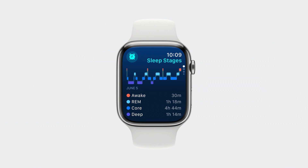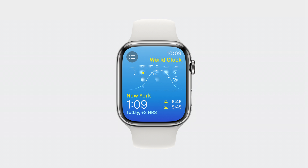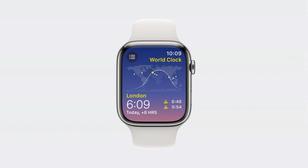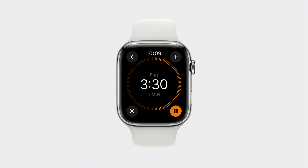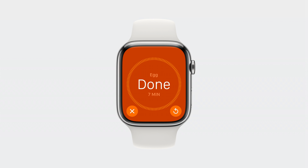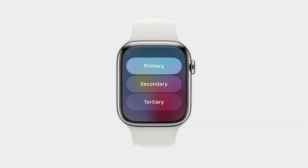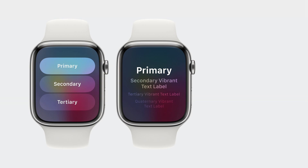Another great use of full screen color is to set tone, like this calming blue background in Sleep. You can use color to convey information at a glance, like in World Clock where we use solar gradients to show the time of day. You can also use full screen color to convey a state change — in Timers, the background is black when the timer is counting down, and then bright orange declares that my egg timer is done. To make sure foreground elements look great over all of these backgrounds, we added vibrant fill materials to controls and platter cells, and vibrant text labels in primary, secondary, tertiary, and quaternary prominence levels for creating information hierarchy in typography.